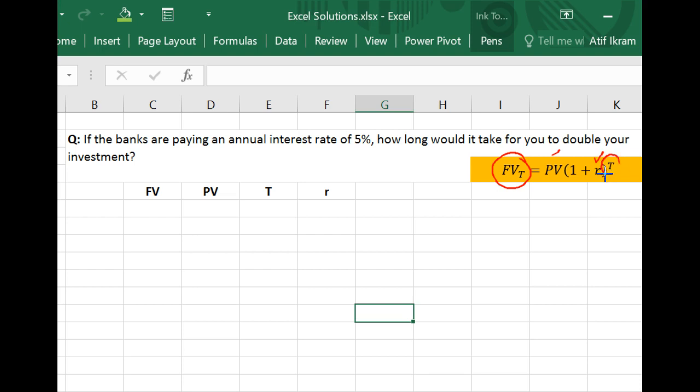In other words, how long it takes or what is the value of T such that a present value number gets converted into a future value for a given interest rate. So let's take a look at this question. Let's suppose that the banks are paying an annual interest rate of 5%. The question is asking you, how long would it take for you to double your investment?